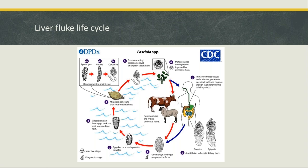Once in the snail, the parasite goes through several life stages: the sporocyst, the redia, and the cercaria. During this stage they can actually multiply themselves — one miracidium coming in can turn into 40 or 50 cercaria coming out. About six to eight weeks after the snail is infected, these liver fluke stages called cercaria then erupt out of the snail and go swimming out into the water again, looking for vegetation to latch onto.